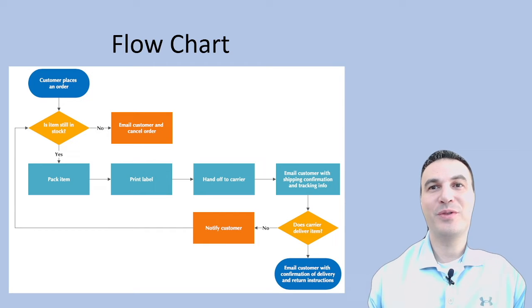Flowcharts are perhaps the most common and straightforward process mapping techniques. They use standardized symbols to represent different steps in a process, making it easy for anyone to follow the workflow. Flowcharts are excellent for illustrating sequential processes and decision points, providing a bird's eye view of the entire process.